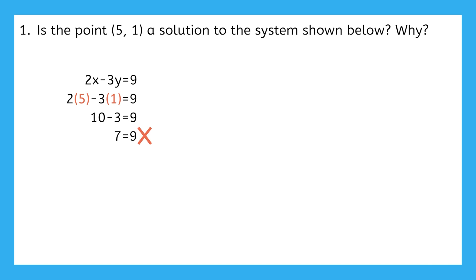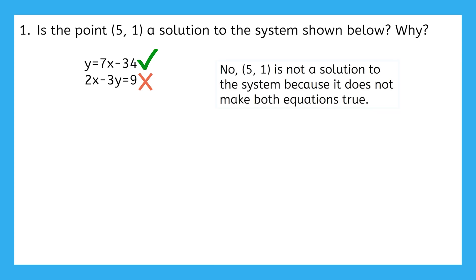I guess this point is not a solution to this second equation. So if a point is a solution to one equation in the system, but not the other, is it a solution to the entire system? No. For a point to be a solution to the system, it has to be a solution to both equations in the system. So our answer to this original question is no. (5, 1) is not a solution to the system, because it does not make both equations true.